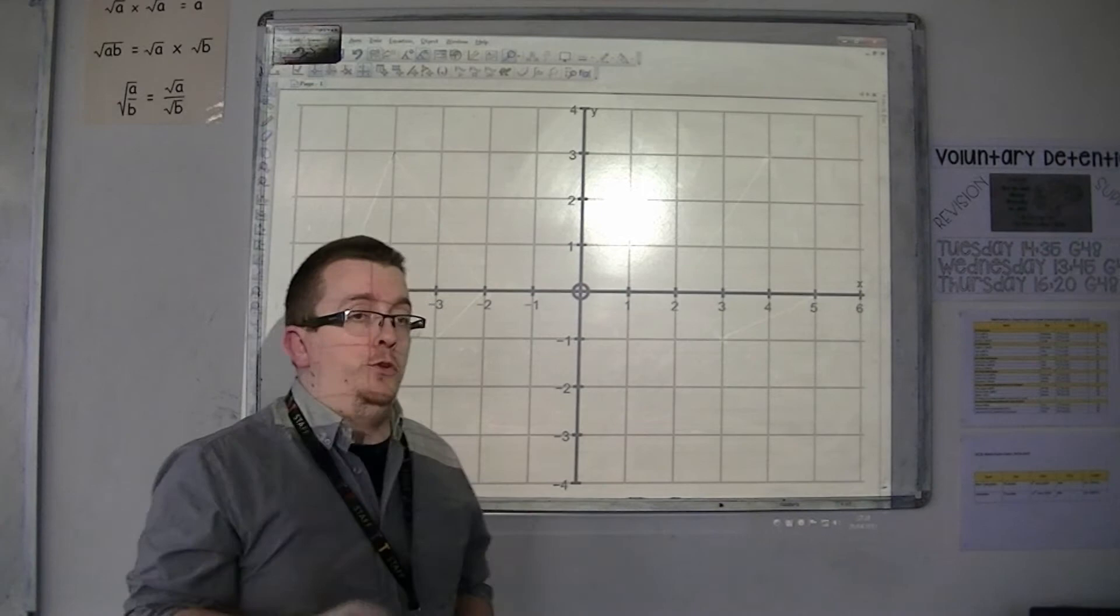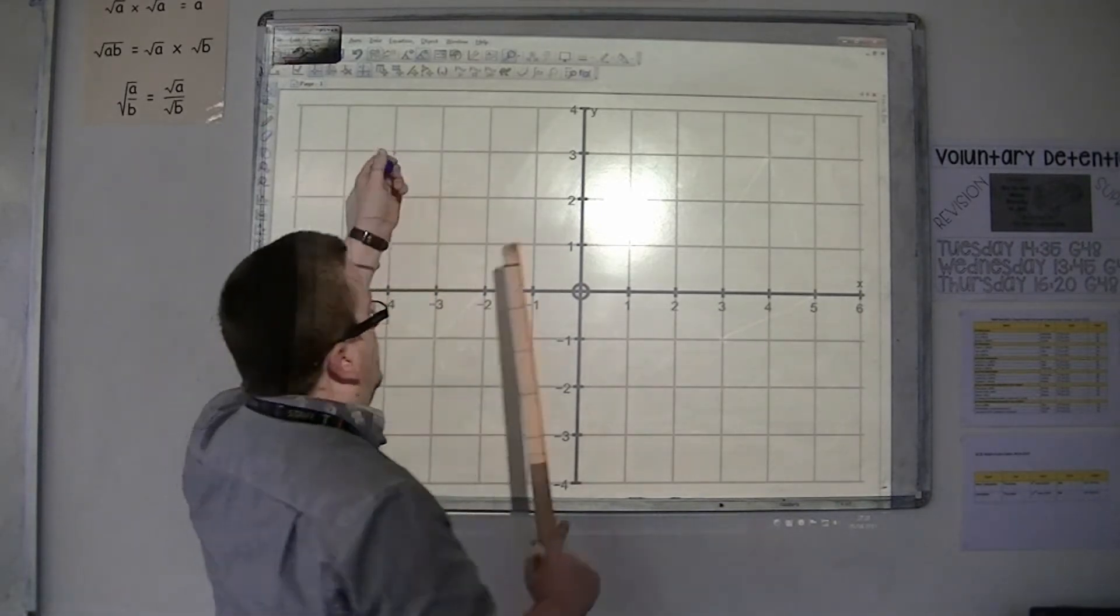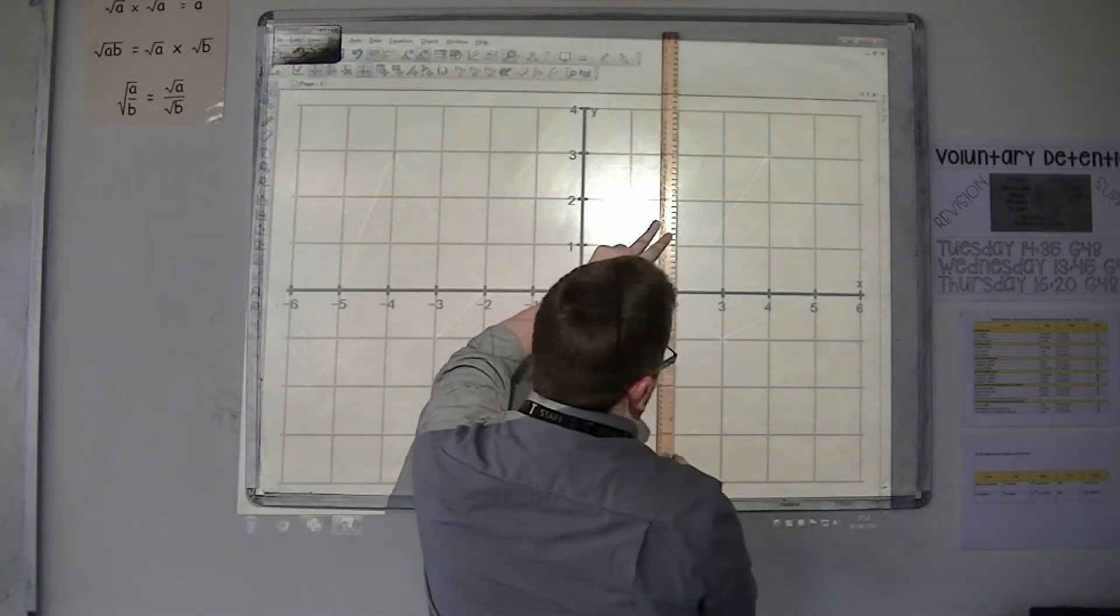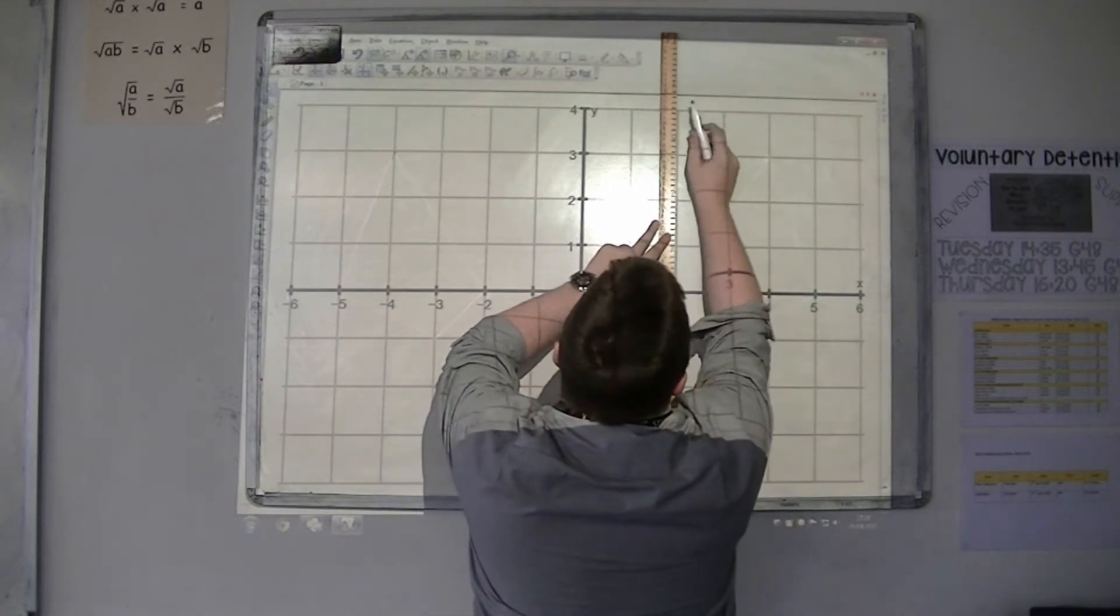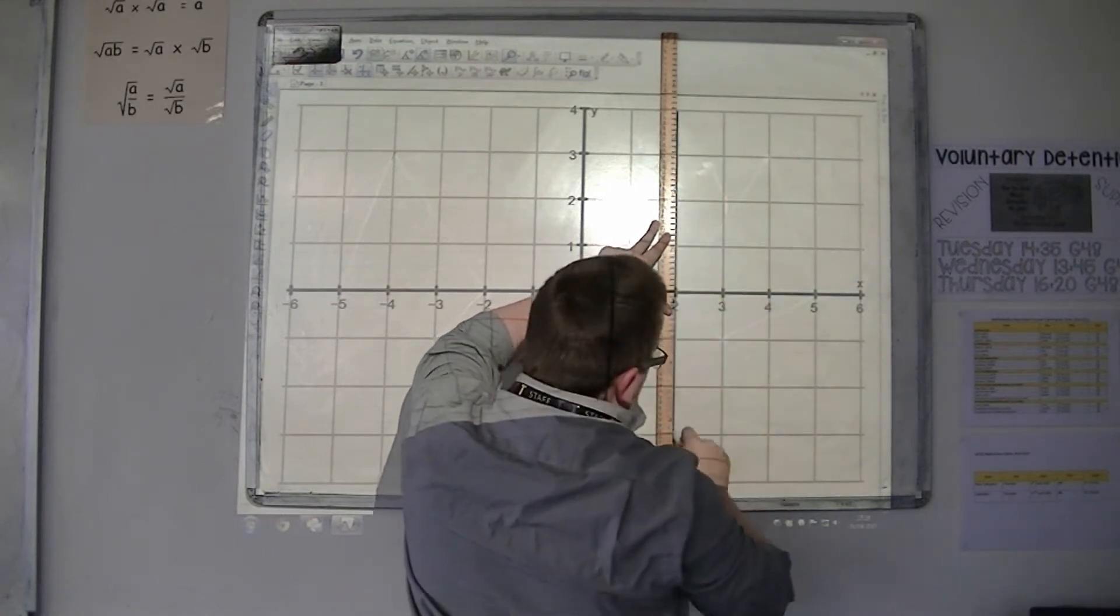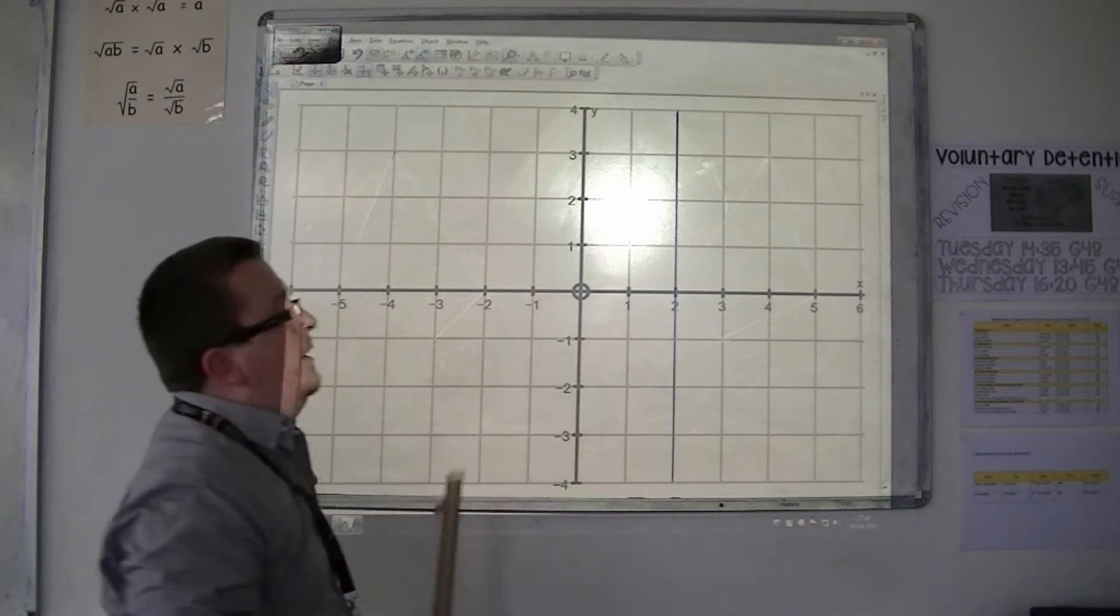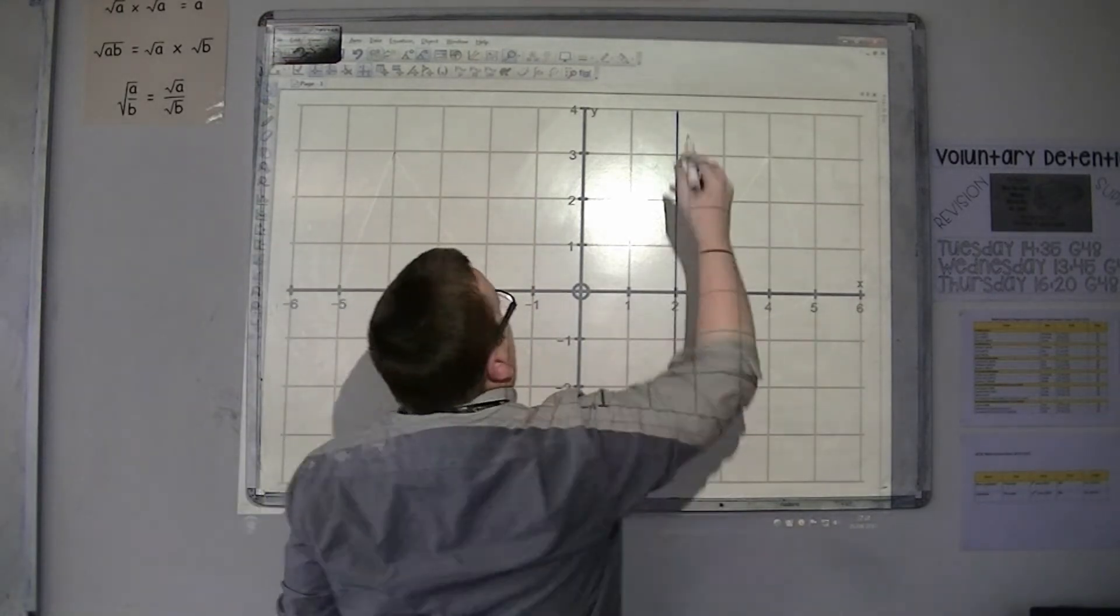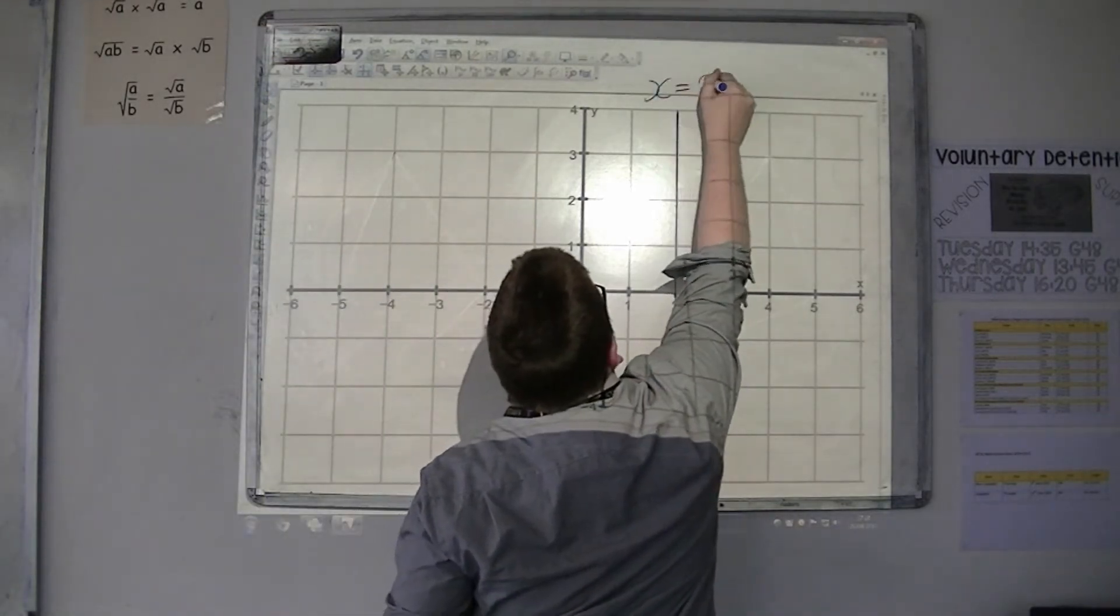So first of all, if we have a line like this, a vertical line, going through 2 on the x-axis, this is referred to as the line x equals 2.